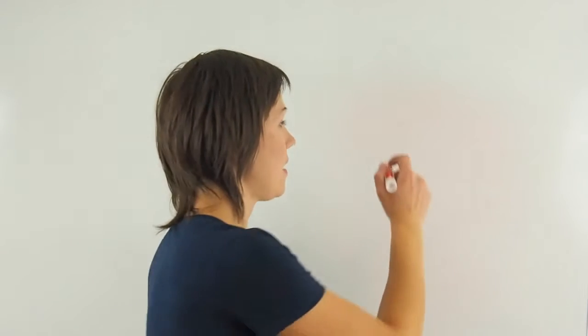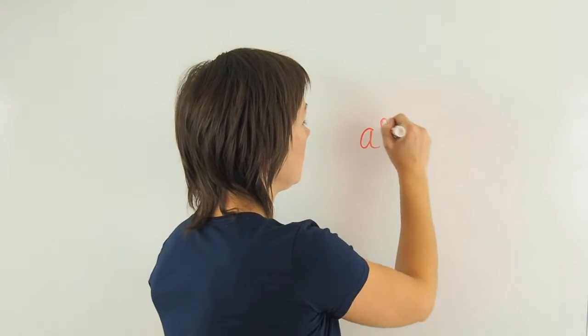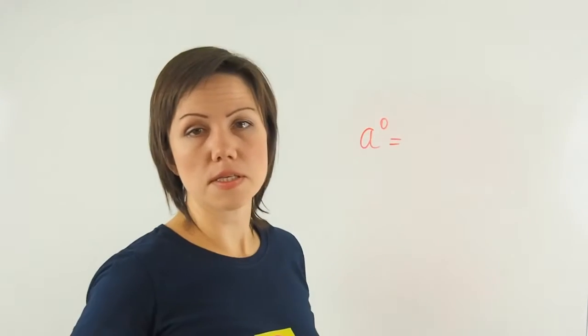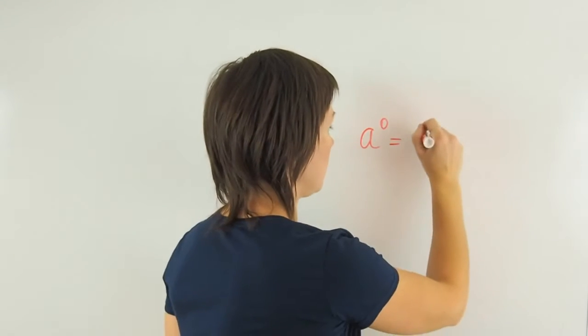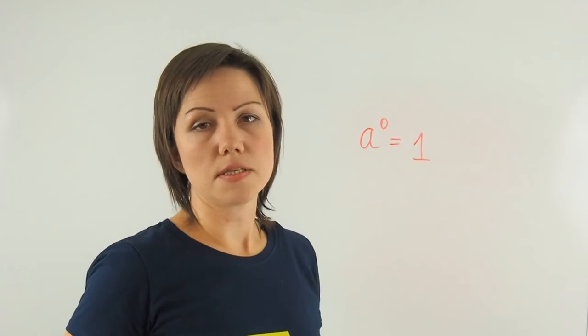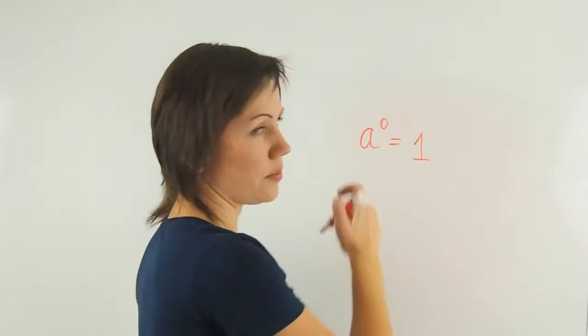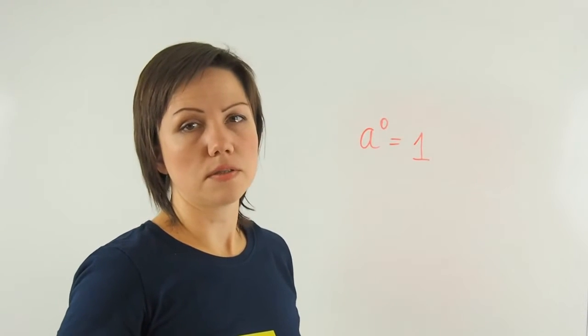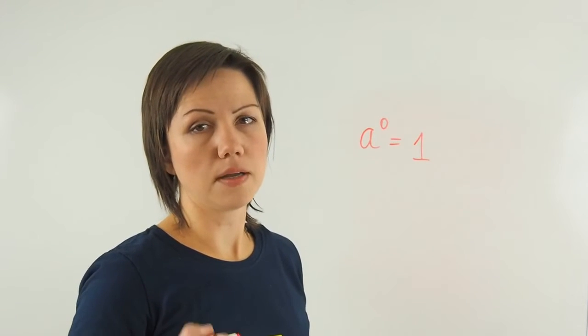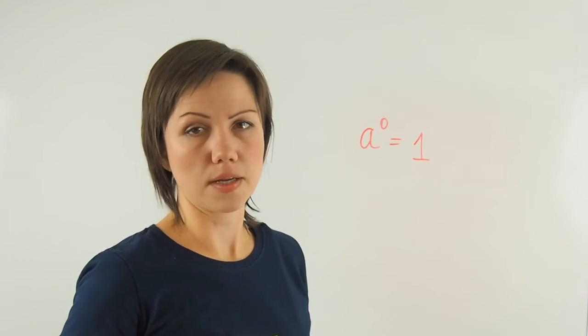Now let's look at some of the important exponent laws, and we're going to start with this one. Any number raised to the exponent 0 is always equal to 1. The exception is 0. 0 to the power of 0 is 0. So any number, even if you take 2345 to the power of 0, it's still going to be equal to 1.